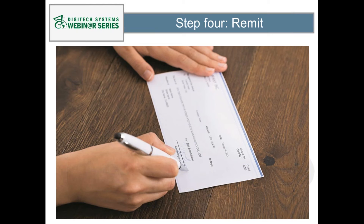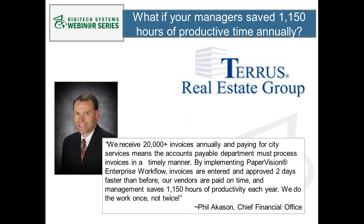Electronic routing is accomplished with applications known as workflow or business process management (BPM), and they dramatically speed and simplify your entire AP process. You will set up rules that designate which approval process each invoice flows into. These can be based on virtually any criteria including the dollar amount, vendor, or type of purchase. As invoices travel through the workflow, each step notifies a user that an invoice needs their attention. They can quickly view not only the invoice but also any supporting documentation, and authorize payment much more quickly.